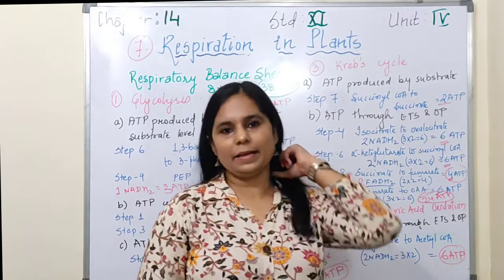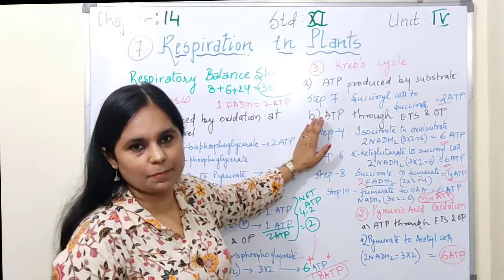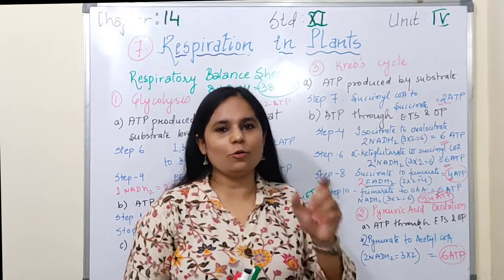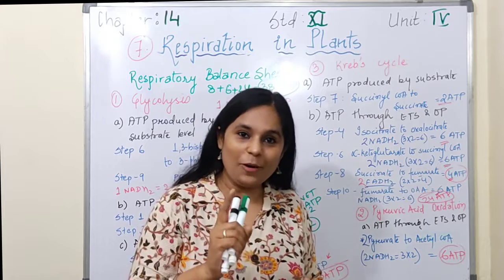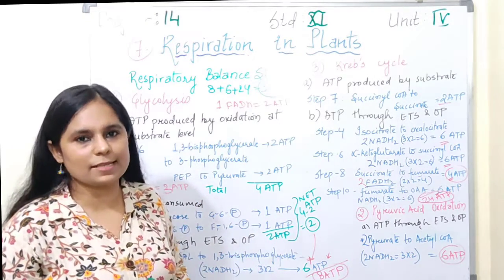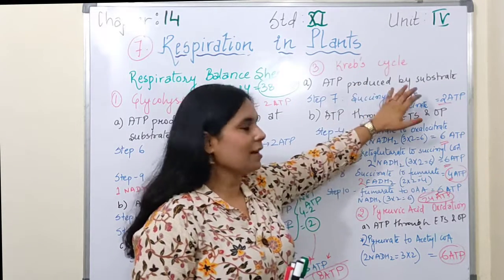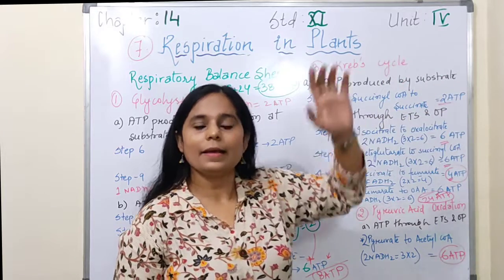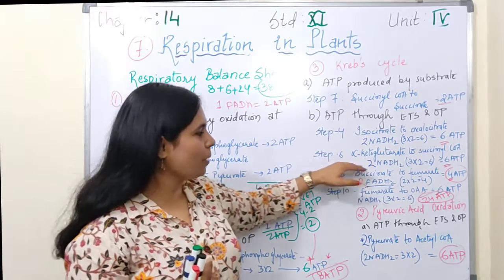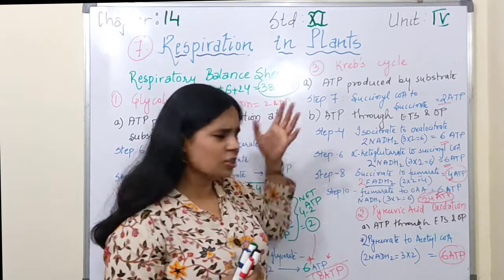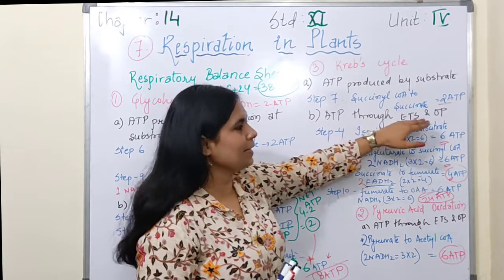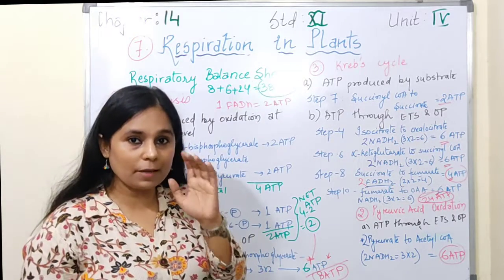So here 38 ATP is formed in case of eukaryotic cell aerobic respiration. Jab bhi aerobic respiration hoga, you will get 38 ATP. We simply saw that glucose in the presence of oxygen produces CO2, water, and ATP — but that ATP, 38 ATP, kis tarike se banta hai, that is very important. Is topic se related MCQs mein poocha ja sakta hai ki substrate-level phosphorylation se Krebs cycle mein kitne ATP ban rahe hain, ya phir kitne ATP FADH2 ki wajah se bante hain — so remember that ATP formed via substrate or via ETS/oxidative phosphorylation, ye concept yaad rakhna bahut zaroori hai.